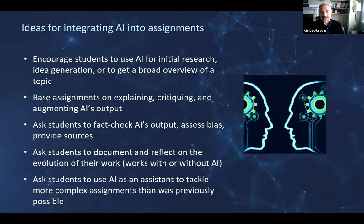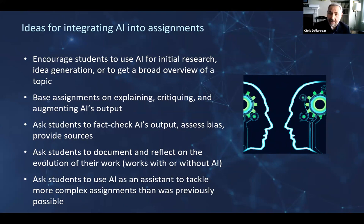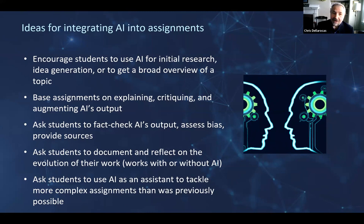When it comes to integrating AI into assignments, one general idea is encouraging students to use AI to get started — for initial research, idea generation, or an overview — and then asking them to go further and improve the output themselves. I've seen assignments that ask students to explain, critique, or augment AI's output. It's also important to develop the ability to fact-check AI's output, assess bias, and help provide sources. The general idea of asking students to document and reflect on the evolution of their work — process versus product — is a great idea that works with or without AI.